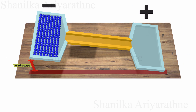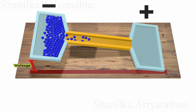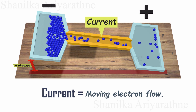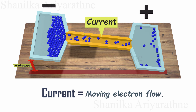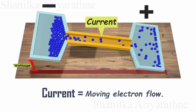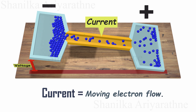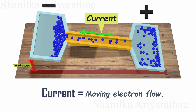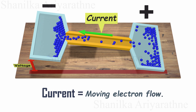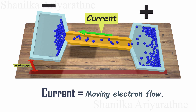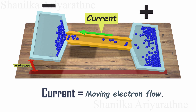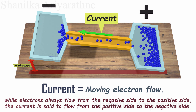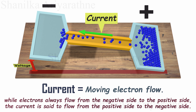The movement of electrons creates a flow of electric charge, which we term as electric current. Since electrons are negatively charged, this flow is technically a negative current. But we humans prefer positive things, so when there's a negative current flowing in one direction, we call it a positive current flowing in the opposite direction. In fact, almost every time we use the term current, we're actually referring to the direction opposite to the electron flow.